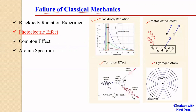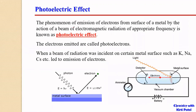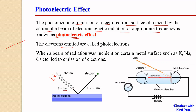The photoelectric effect is the phenomenon of emission of electrons from the surface of a metal by the action of a beam of electromagnetic radiation of appropriate frequency. In simple terms, when radiation of a particular frequency or energy hν falls on a metal surface, electrons are observed to be ejected. These electrons are called photoelectrons, and the phenomenon is called the photoelectric effect. This is generally observed in alkali metals like potassium, sodium, cesium, and so on.